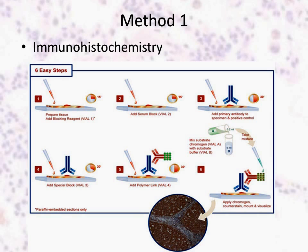For immunohistochemistry, sections were deparaffinized in xylene and rehydrated through successive incubations in decreasing concentrations of ethanol. Light microscopy was then performed on sections stained with hematoxylin and eosin. For immunohistochemical analysis, non-enzymatic antigen retrieval in citric buffer was performed by heating slides to 95 degrees Celsius in 0.01 molar citrate at pH 6 for 30 minutes.